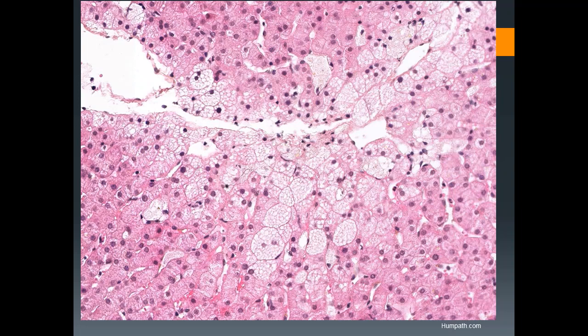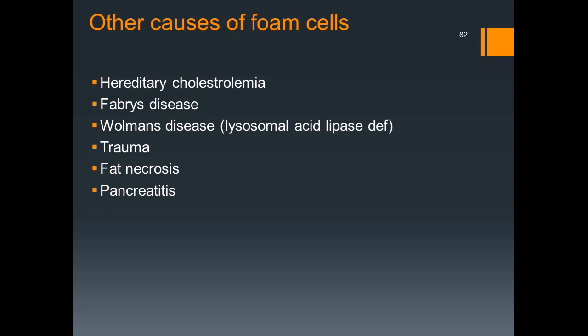A photomicrograph shows accumulation of large cells with bubbly cytoplasm — also called foam cells. Foam cells are not specific to Niemann-Pick disease; they can also be seen in hereditary cholesterolemias, Fabry's disease, Bowman's disease, post-trauma, fat necrosis, and pancreatitis.